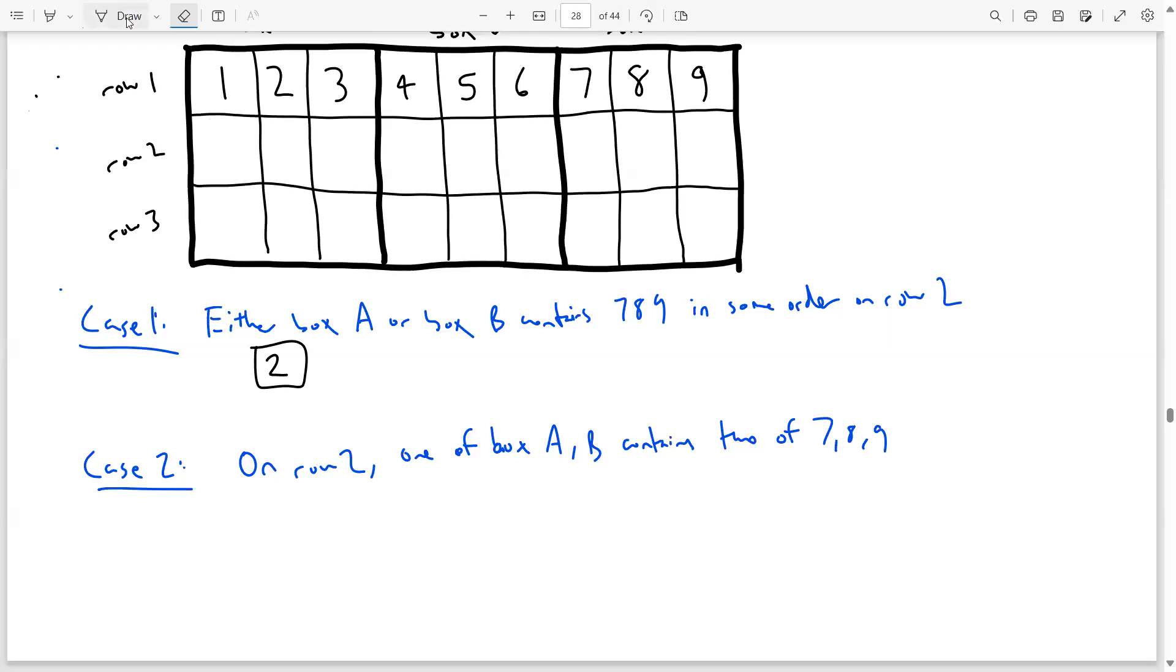Now case 2 is a bit trickier. For case 2, we want 1 of boxes A or B to contain 2 of the numbers 7, 8, 9 on row 2. For example, box A contains 7 and 8, box B contains 9. So how do we enumerate this?